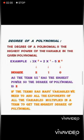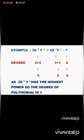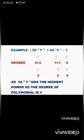Let us consider the example 3x²y³ + 4xy − 7. In the first term, the exponent of x is 2 and the exponent of y is 3, so the sum of exponents is 2 + 3 = 5. In the second term, 4xy, each variable has exponent 1, so the sum is 1 + 1 = 2. The exponent of the constant −7 is 0. The term 3x²y³ has the highest power, so the degree of this polynomial is 5.